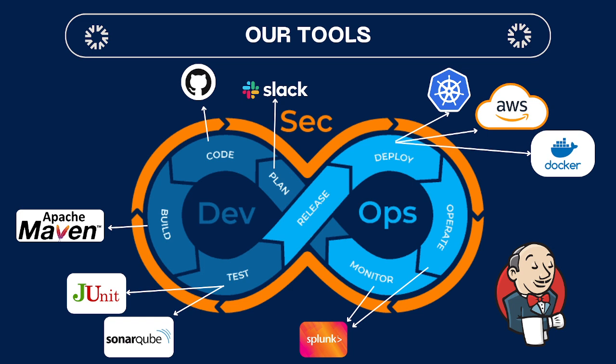The pipeline consists of several parts. The second part is the Code, and we use GitHub. The third part is the Build, and we use Build tools. Then we use unit tests for test functions, and we use the pipeline for release and deployment. Then we use AWS to deploy.